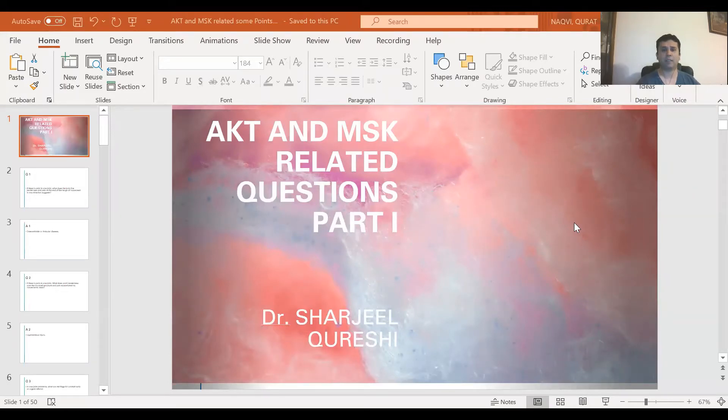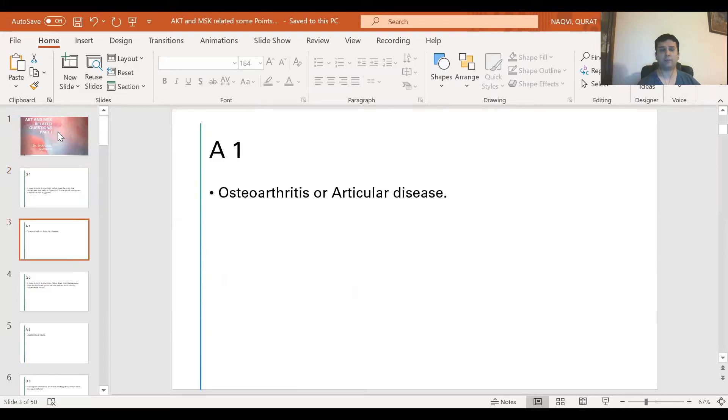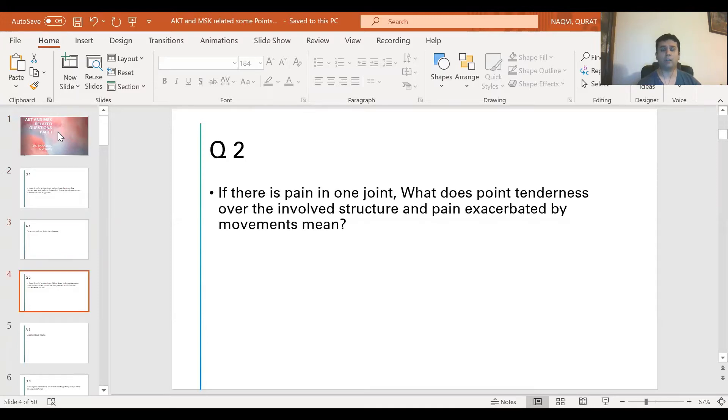Question 1: If there is pain in one joint, what does joint line tenderness and pain at the end of the range of movement in any direction suggest? Osteoarthritis or articular disease. Question 2: If there is pain in one joint, what does point tenderness over the involved structure and pain aggravated by movement mean? It suggests ligamentous injury.